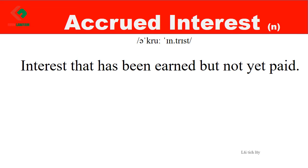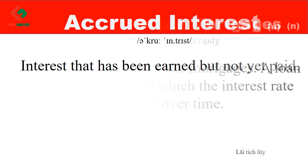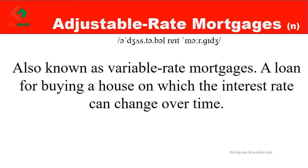Accrued interest: Interest that has been earned but not yet paid. Adjustable rate mortgages, also known as variable rate mortgages: A loan for buying a house on which the interest rate can change over time.